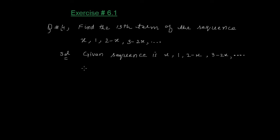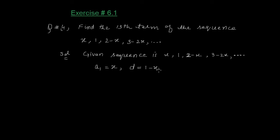जब भी आपको sequence की किसी भी position की term find out करनी हो, उसके लिए A1 और D find out करना जरूरी होता है। हर question में चाहे 13th term, 17th term, 19th term — किसी भी position की term पूछी गई हो — पहले A1 और D find out करेंगे। यहाँ पहली term X है, तो A1 = X। Common difference D = 2-X-1 = 1-X।